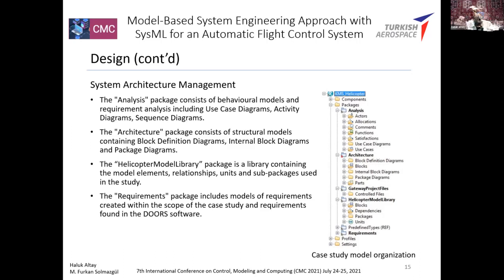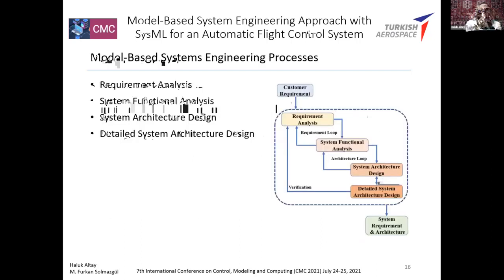In the system architecture management, there are a number of packages in the case study. The analysis package consists of behavioral models for requirements analysis, including use case diagrams, activity diagrams, and sequence diagrams. The architecture package consists of structural models containing block definition diagrams, internal block diagrams, and package diagrams. The helicopter model library contains model elements, relationships, units, and sub-packages used in the study. The requirements package contains the models of requirements created within the scope of the case study.